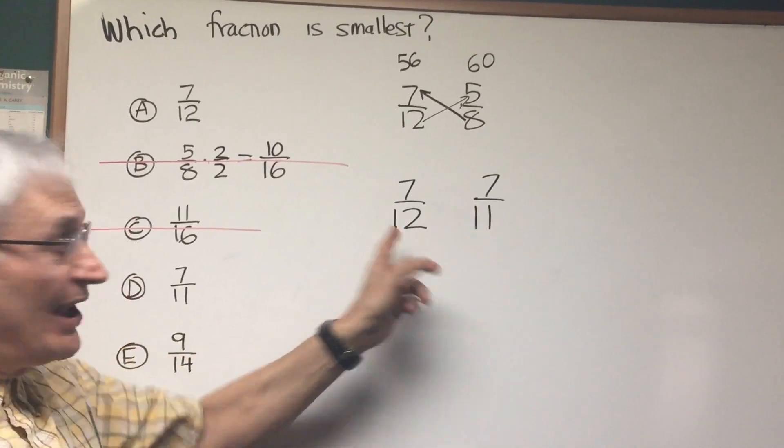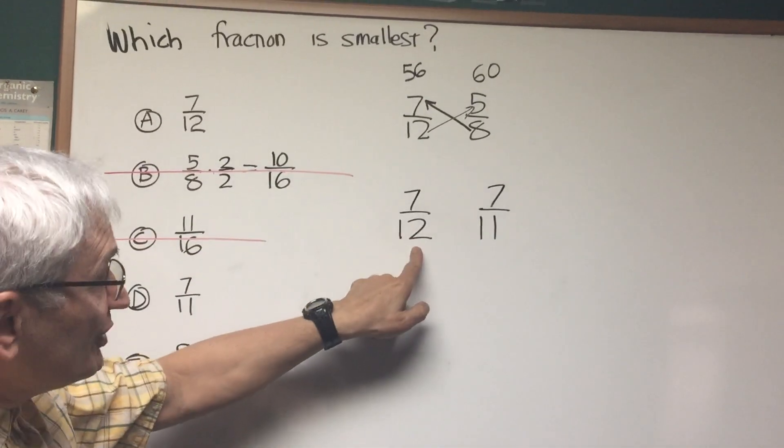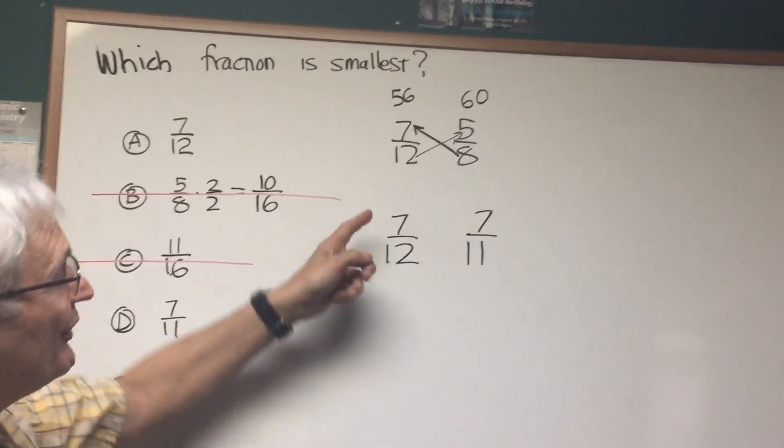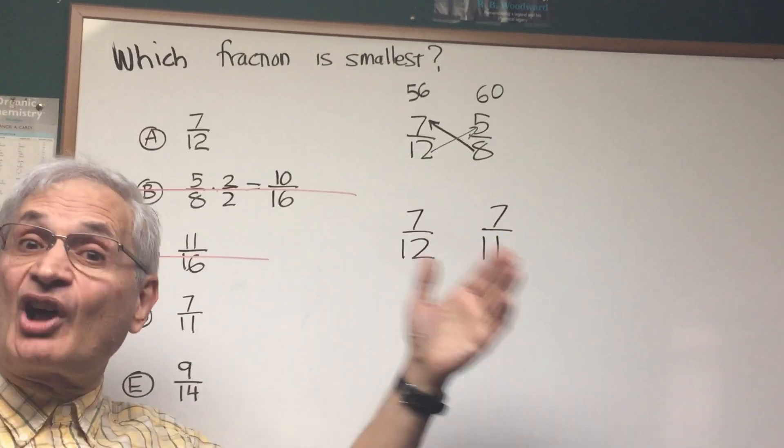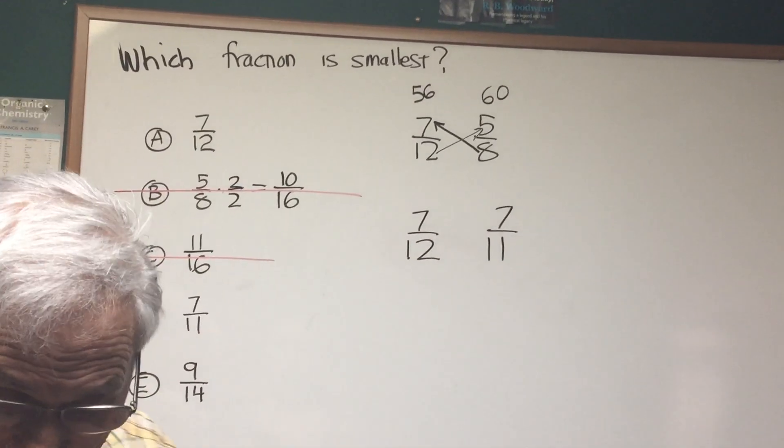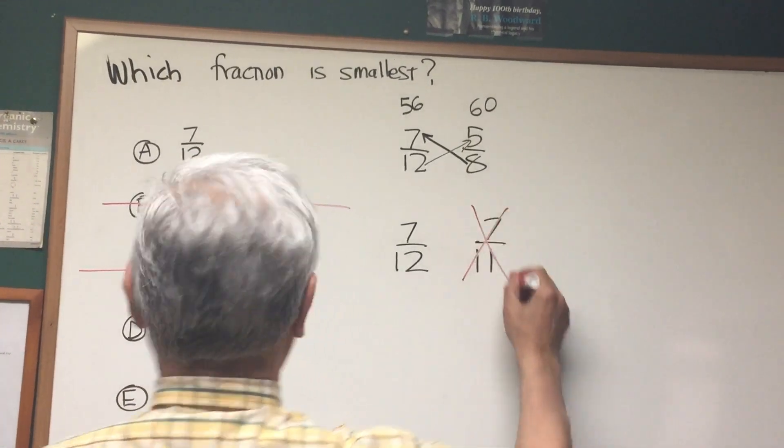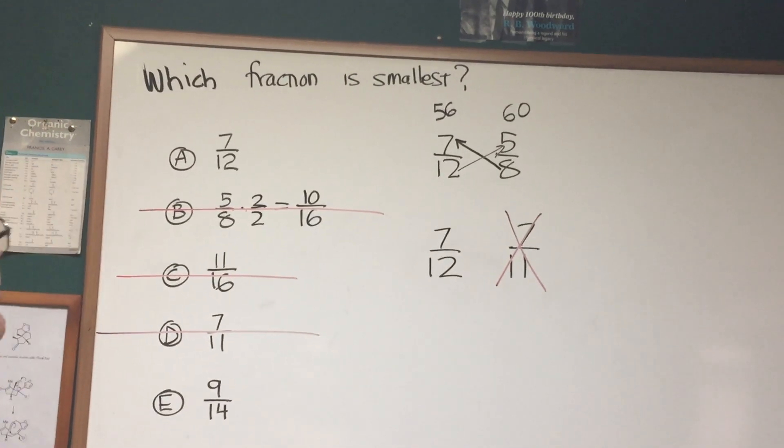The denominator tells you how many pieces the pie is divided up into. The larger number of pieces the pie is divided into, the smaller the pieces. So these are seven smaller pieces, 7 twelfths, and 7 elevenths is seven larger pieces. So that means 7 elevenths is larger, so we can cross that out. We're looking for the smallest, so we can cross 7 elevenths out.